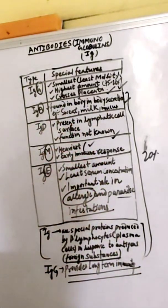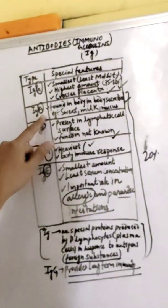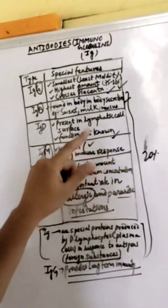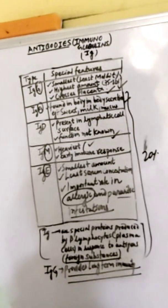IgA is found in body secretions such as milk, breast milk, tears, and mucus. With the help of mucus and breast milk, it provides protection against bacteria, fungi, and other pathogens.